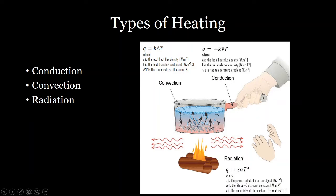Another form of heat transfer is convection — the movement of a material that causes the transfer of heat. You can see here the pot being warmed from the bottom, where those warmer particles are expanding and moving up, causing a circulation of material, and that's how the heat is being transferred through the material.